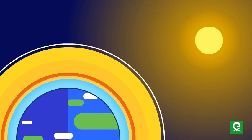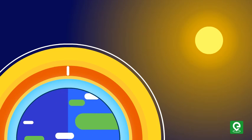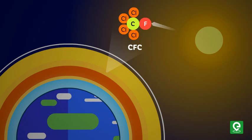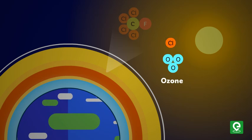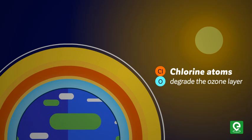CFCs are discharged in the lower part of the atmosphere, move upward and reach the stratosphere. In the stratosphere, UV rays act on chlorofluorocarbons or CFCs and release chlorine atoms. These chlorine atoms degrade the ozone layer, but chlorine atoms are not consumed in the reaction.